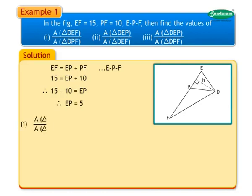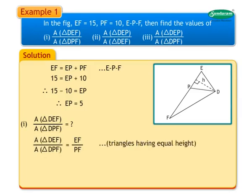Number 1: Find the ratio of area of triangle DEF upon area of triangle DPF. Area of triangle DEF upon area of triangle DPF is equal to EF upon PF, as they are triangles having equal height. Therefore, 15 upon 10 is equal to 3 upon 2.